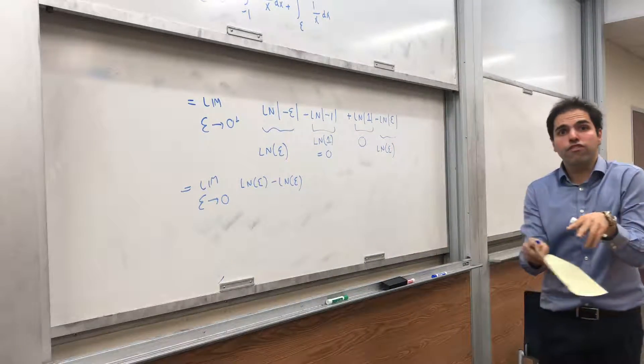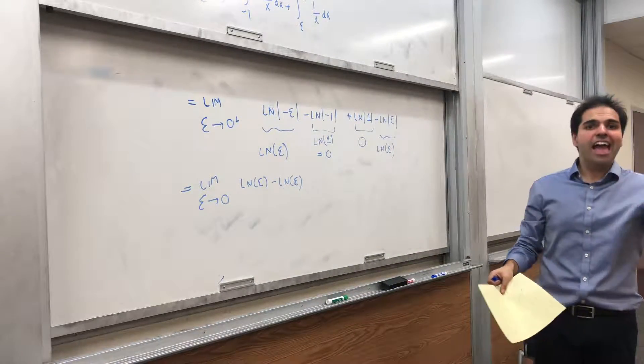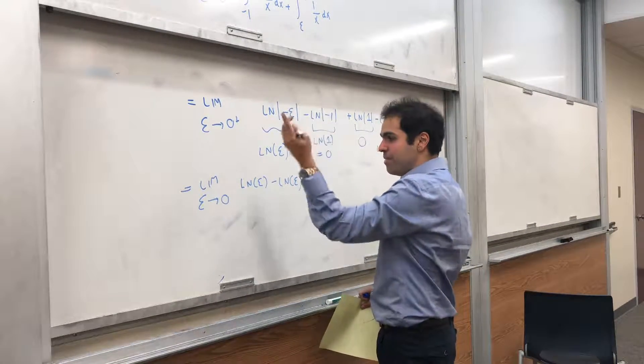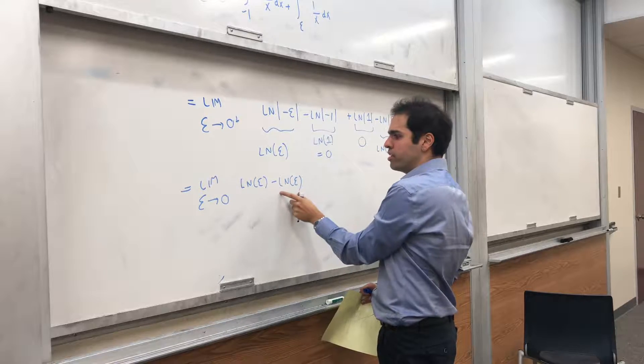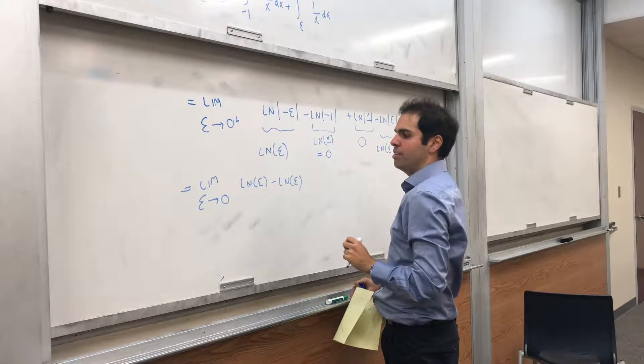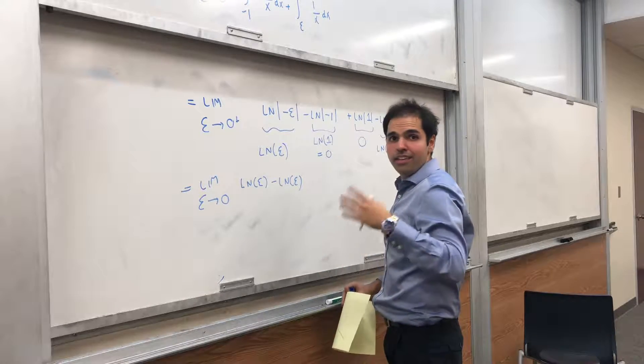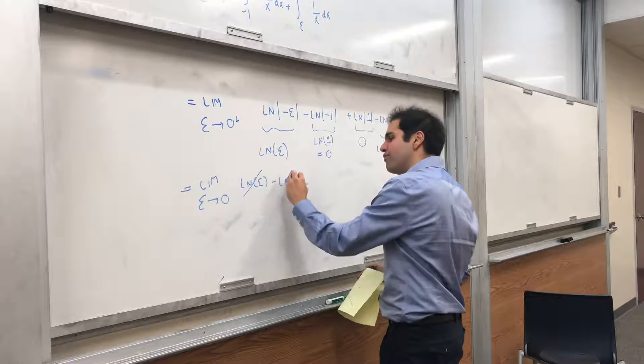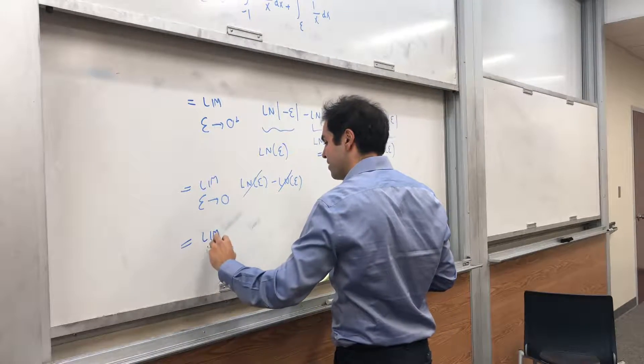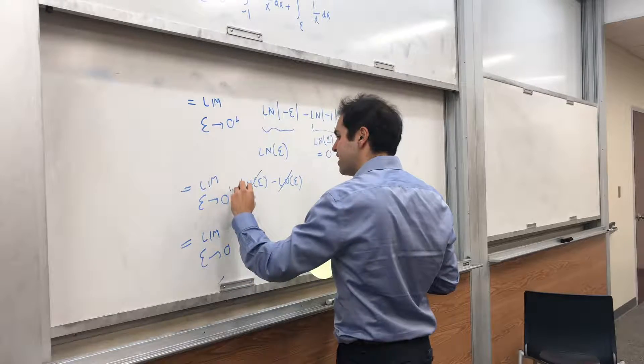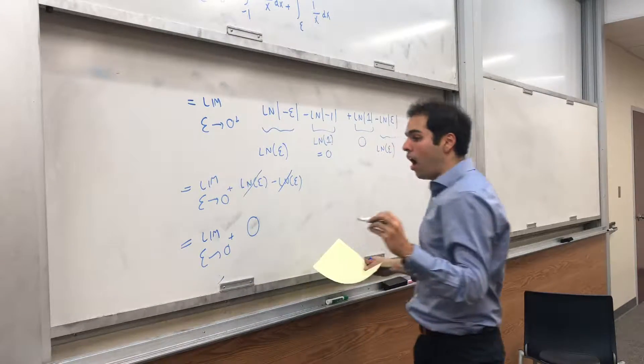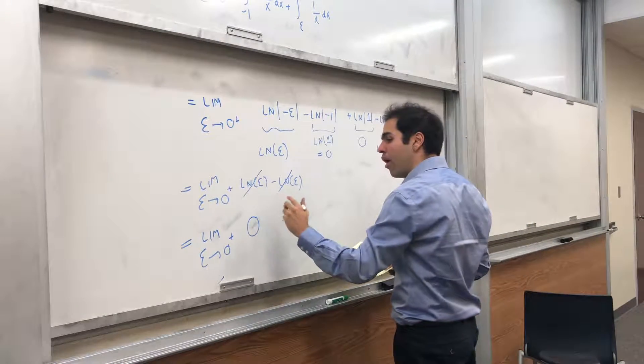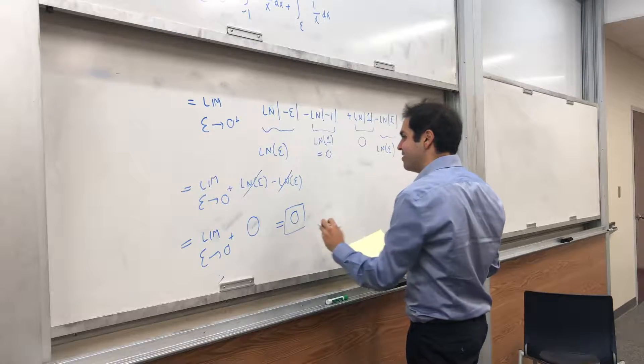So you're taking limit as epsilon goes to 0 of ln epsilon minus ln epsilon. And again, you're first taking the difference, and then you take the limit. That's the subtle thing. In the improper integral, you first took the limits to get something minus infinity plus infinity, and then you sort of took the sum, which you said was not defined. Here, you first take the difference, and then you take the limit. So really, we're taking limit epsilon goes to 0 plus of the function 0. And the function 0 always has value 0, so the limit is 0.